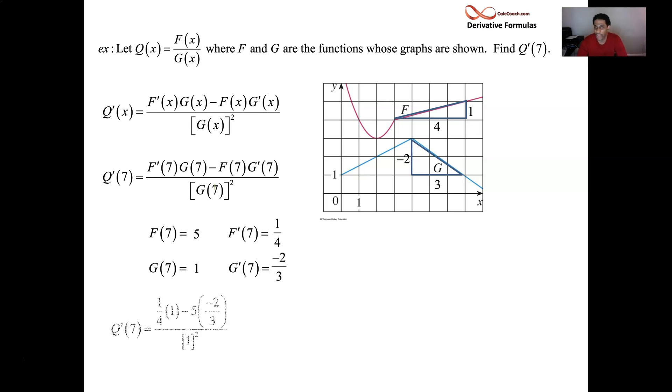Let me just plug everybody in there. A fourth times 1, 5 times negative 2 thirds with a minus in between them. Oh, divided by 1 squared. A little fraction arithmetic, nothing big here. A fourth plus 10 thirds. Okay. So we go to 12ths and we have 3 of them plus 40 of them. 43 twelfths. That's the answer. Okay. All right, great.